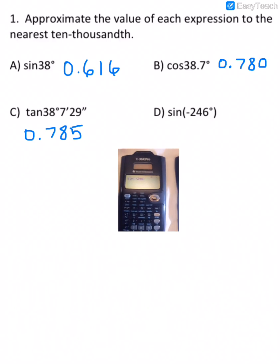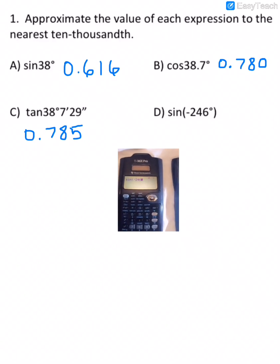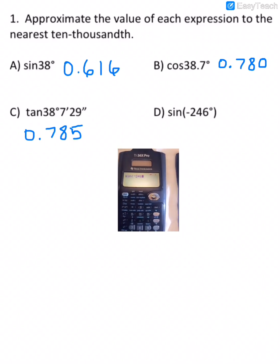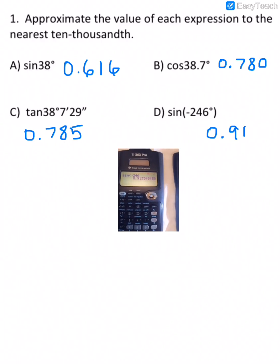You don't have to, if it doesn't have anything other than degrees, you know, if it doesn't have the minutes and seconds, you don't have to put the degree symbol. And then we get 0.91 and then 35, so that would round up to a 4.